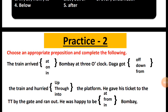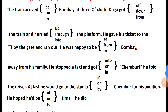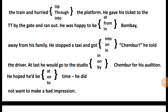Choose an appropriate preposition and complete the following. You are given three prepositions for each blank. The train arrived — at / on / in — Bombay at three o'clock. Daga got — off / down / from — the train and hurried up the platform. He gave his ticket to the TT by the gate and ran out. He was happy to be — at / from / in — Bombay, away from his family. He stopped a taxi and got in — Chambur, he told the driver. At last he would go to the studio — in / on / by — Chambur for his audition. He hoped he would be — at / on / to — time. He did not want to make a bad impression.